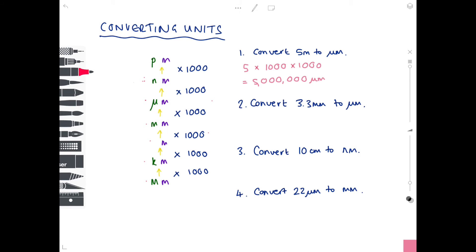We're now converting three millimeters to micrometers. So we're going from here to here. So we just need to times by a thousand. So we're just timesing by a thousand once.